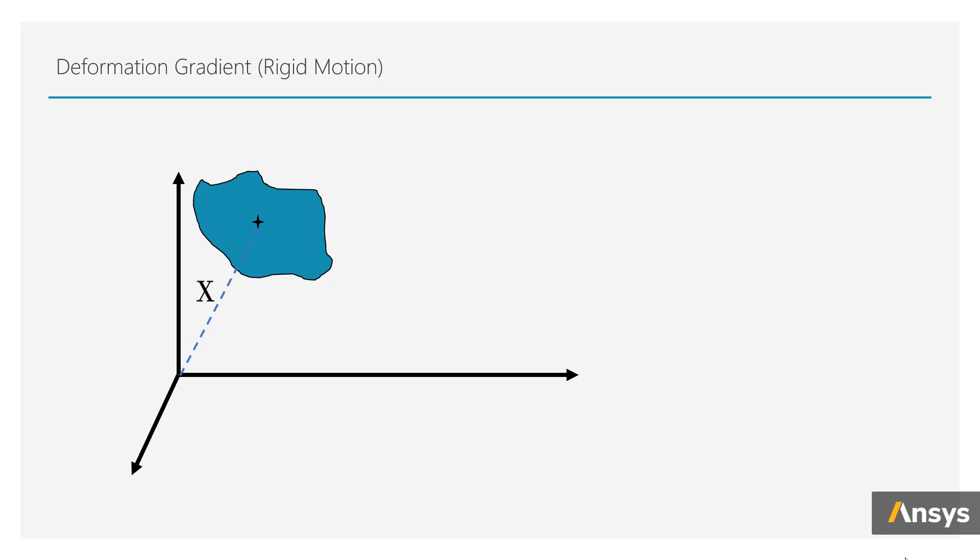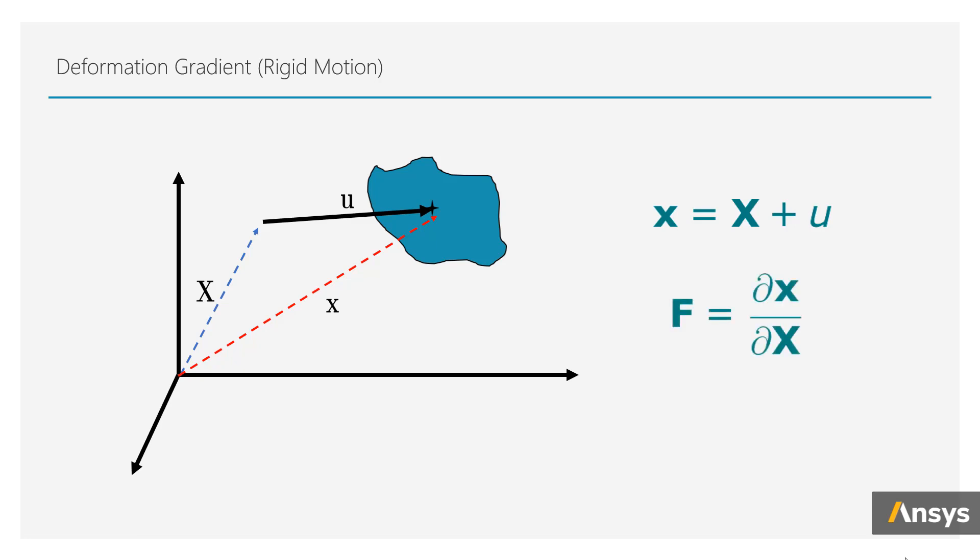Here, the object is simply drifting from one place to another. This is simple rigid body motion, and no portion of the body is deforming. This means that the vector x is just a linear function of capital X. If you compute the deformation gradient for this body, it reduces to an identity tensor.